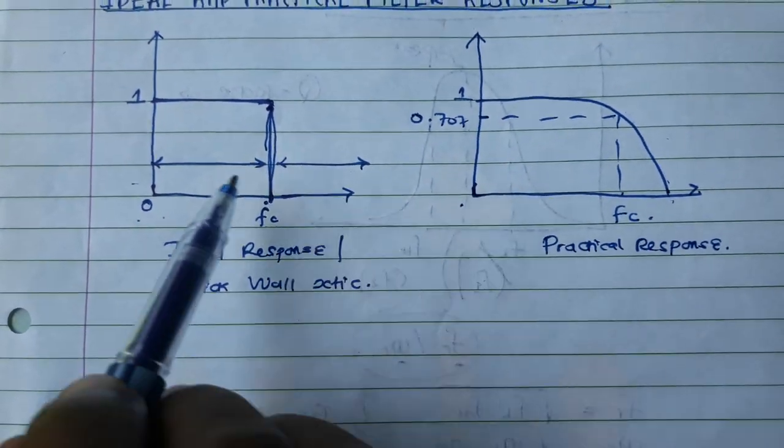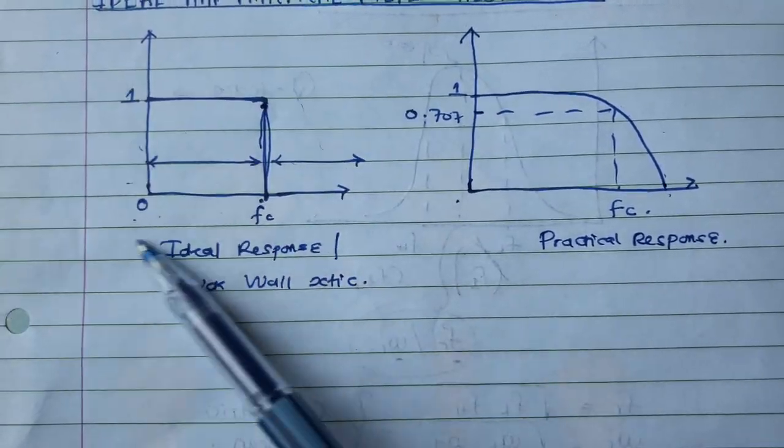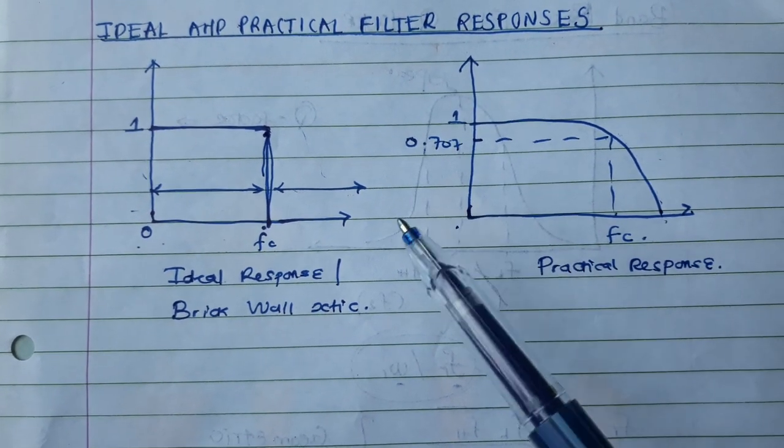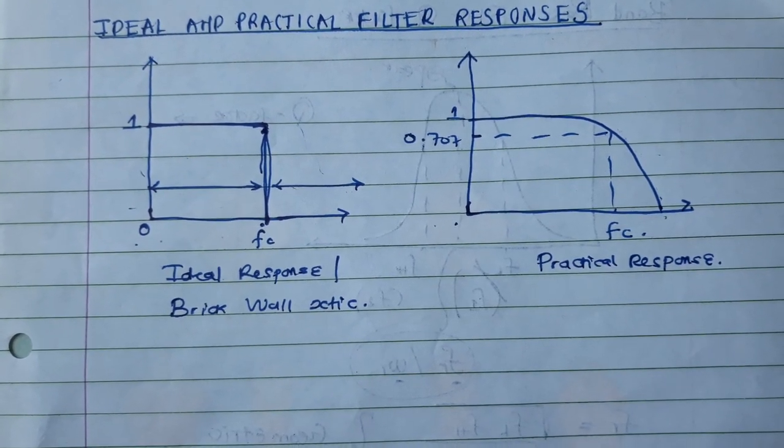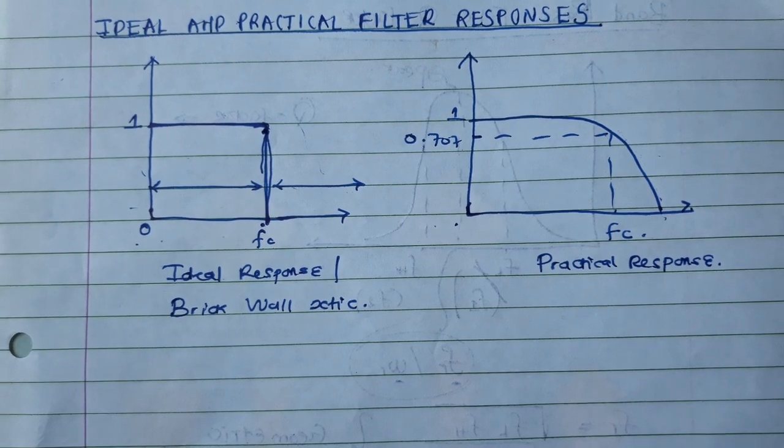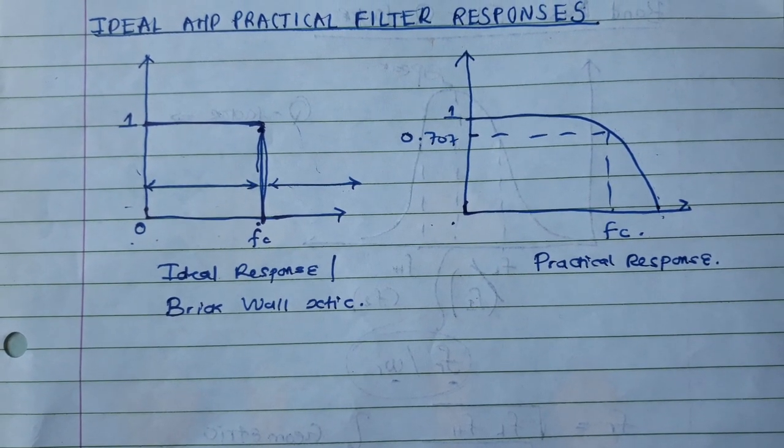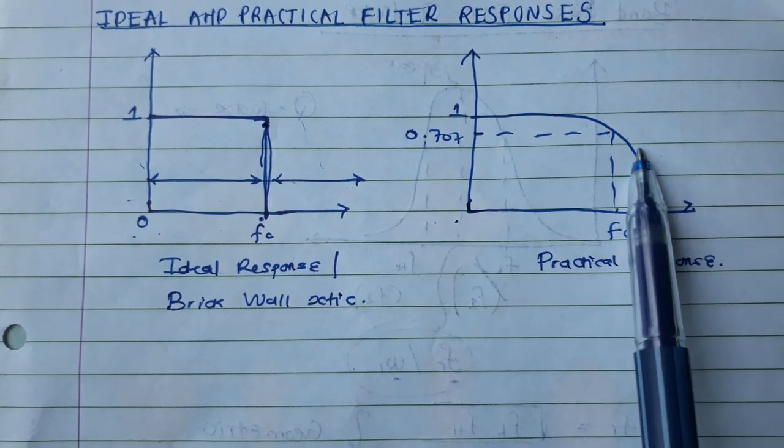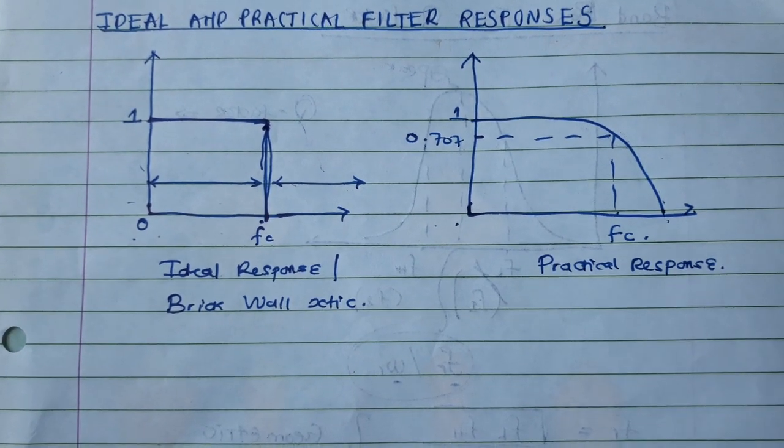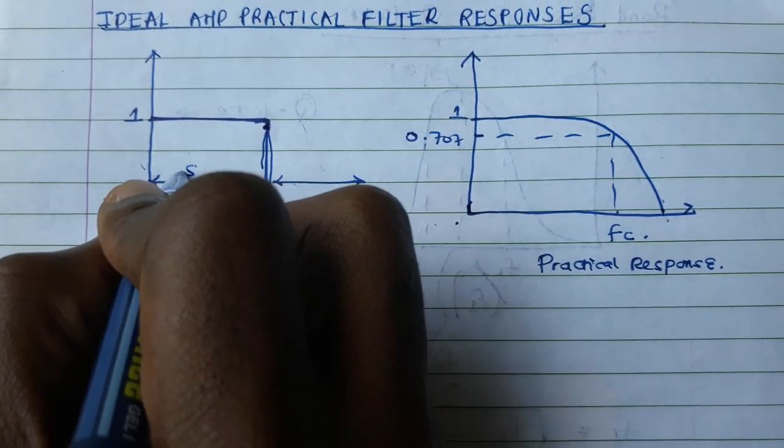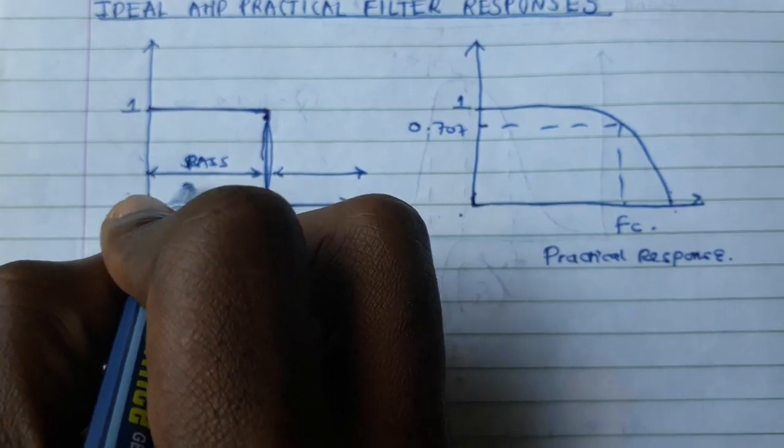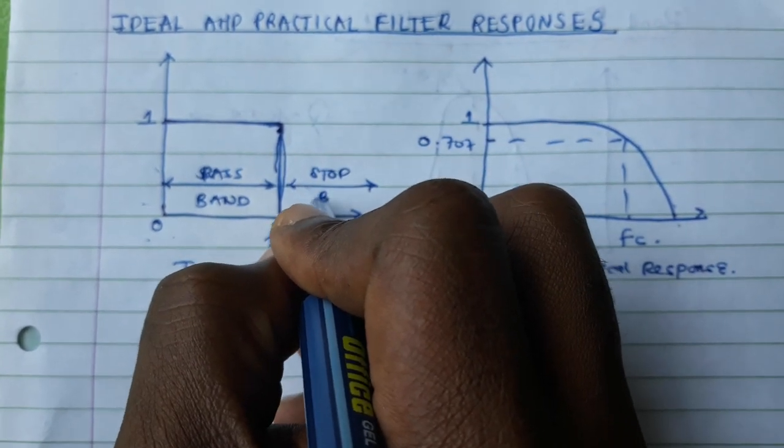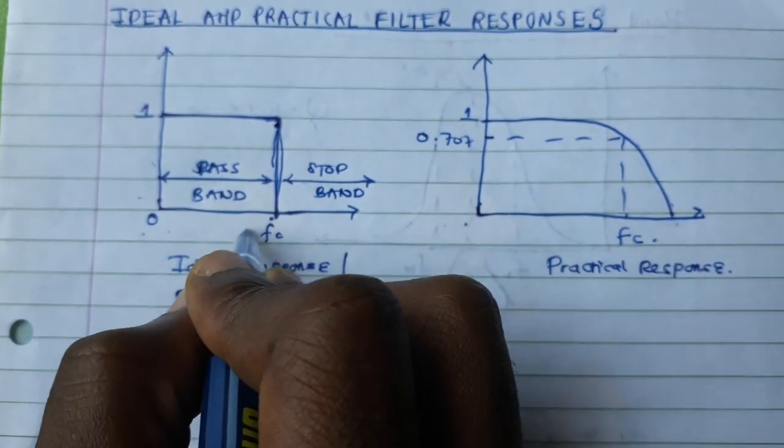The reason as to why we usually do not achieve this ideal response is because we usually use energy storage elements, that is the capacitor and in some cases the inductor, in passive filters. And that's why we have this transition. So in this case, this is our passband and this is our stopband, this is our cutoff frequency.